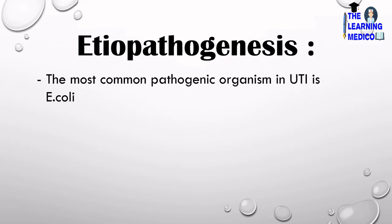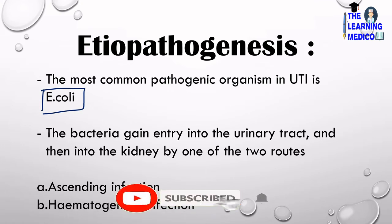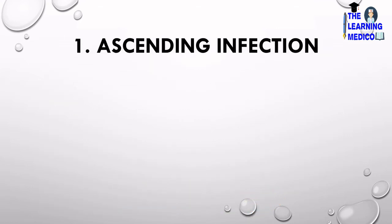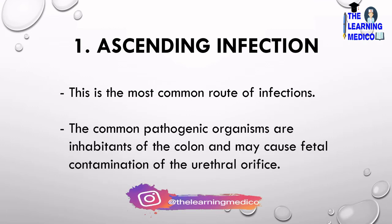So, etiopathogenesis: the most common pathogenic organism in UTI is E. coli. E. coli is the main pathogen which mainly causes this. Bacteria can get entry into the urinary tract and then into the kidneys by one of the following routes. The ascending route is the most common route of infection.